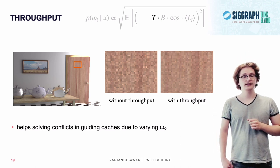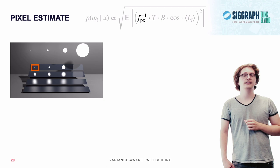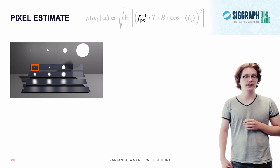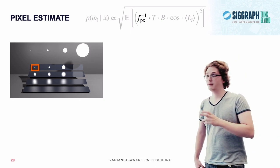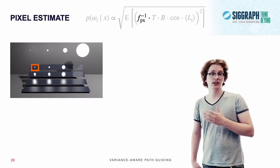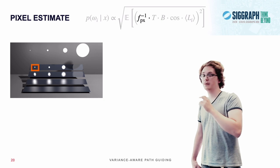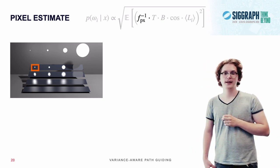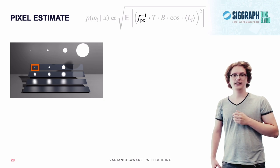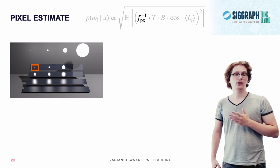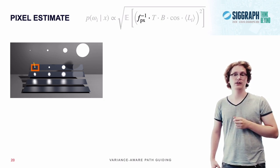Last but not least, there's also the division by pixel estimate. Now, to understand why this is important, let's take a look at the Veach MIS scene again. Now, I've marked here a guiding cache, which contains the reflection of the small light source on the left. Now, since this small light source is very bright, guiding will essentially focus all sampling nearly exclusively on this light source.